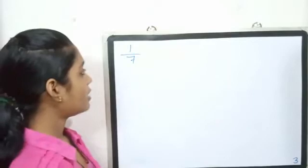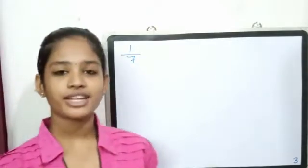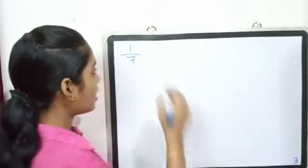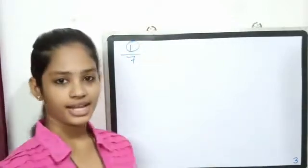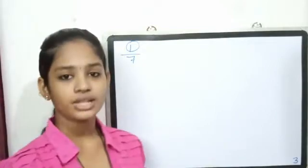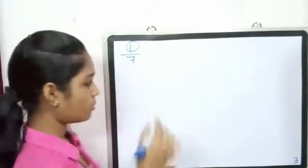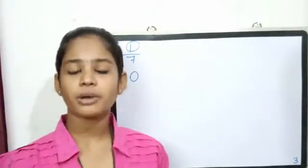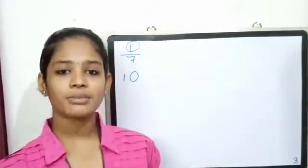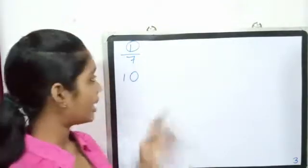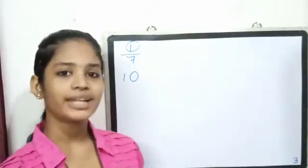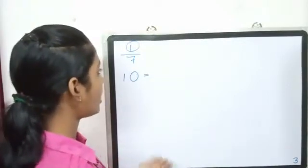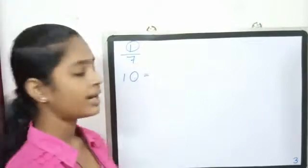For example, 1 by 7. How to calculate 1 by 7 as a decimal formula. The numerator is 1. 1 into 10 is equal to 10. We will multiply 10. The numerator is equal to 10.